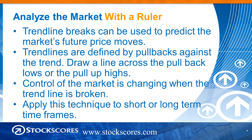We define trend lines by pullbacks against the trend. We want to draw a line across the pullback lows in the case of an uptrend, or the pull-up highs in the case of a downtrend. Control of the market is changing when the trend line is broken. We can apply this to the short-term using intraday charts, or to the very long-term looking at weekly or even monthly charts.